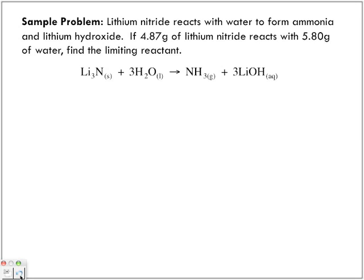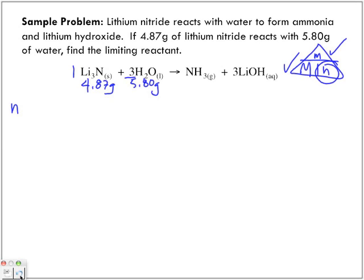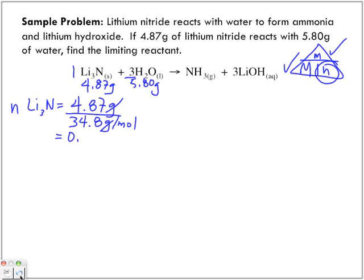I've given you the equation here, and that's the first thing you want to start off with. So the moles of lithium nitride — we start off with our mass, which is 4.87 grams, and we're going to divide it by the molar mass of lithium nitride, which is 34.8 grams per mole. Grams cancel out, leaving me with 0.140 moles of lithium nitride.